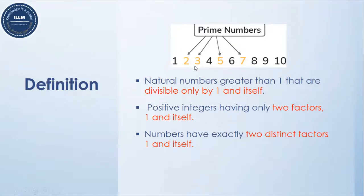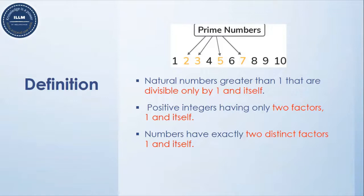One, two, three, four, five, six, seven, eight, nine, ten. In this list of numbers, two, three, five, and seven are the only prime numbers. Why? Because two is having only two factors: one and itself.